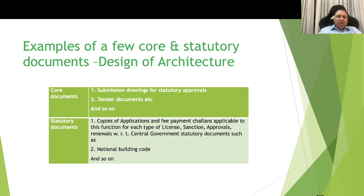Examples of core and statutory documents in the architectural design function include submission drawings for statutory approvals and tender documents. Statutory documents for the architectural function include copies of the application and fee payment for each of the plans applicable to this function, for each type of license, sanctions, approvals, renewals, etc., with central government statutory authorities and national building court, etc.